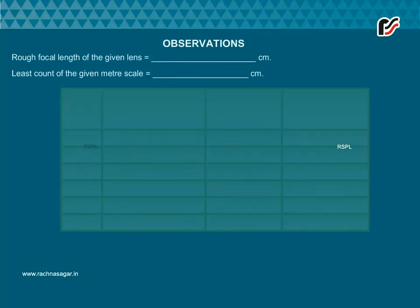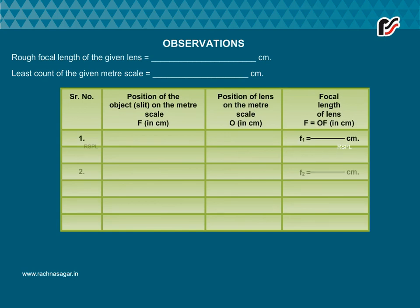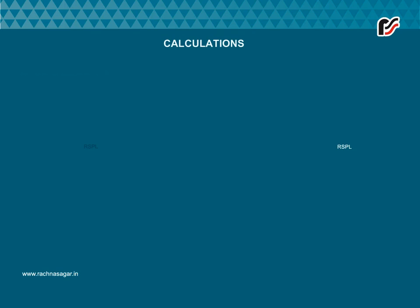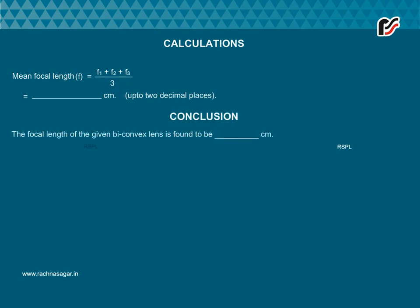Record your observations and do calculations as follows. Conclusion: The focal length of the given biconvex lens is found to be dash centimeters.